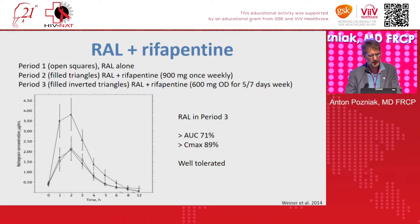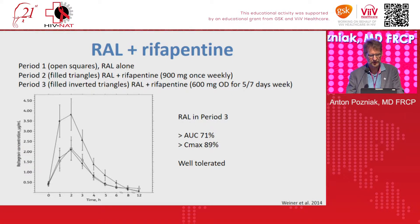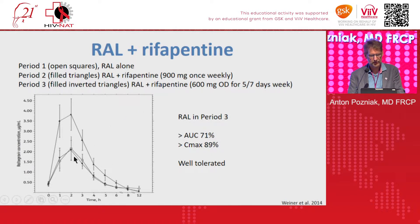There is very little data on Rifapentine drug interactions. Rifapentine may become a major drug for TB prophylaxis. Data shows Raltegravir levels go down with Rifapentine 900mg once weekly or 600mg once daily for five days, but levels remain probably adequate and the combination is well tolerated.